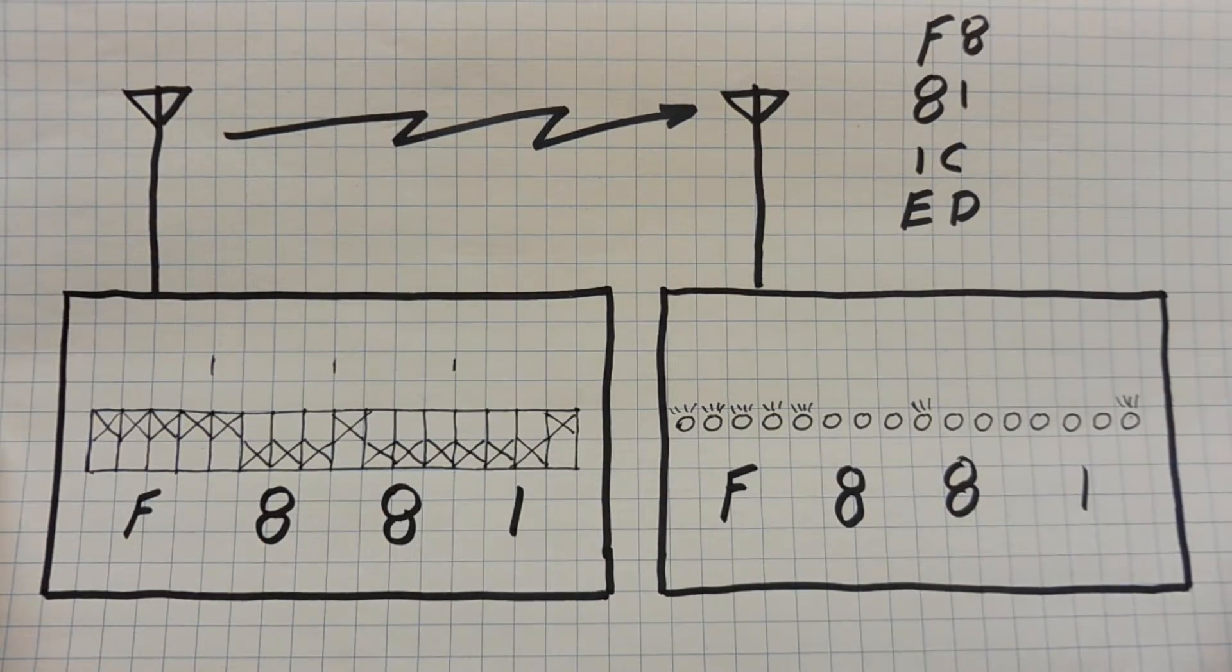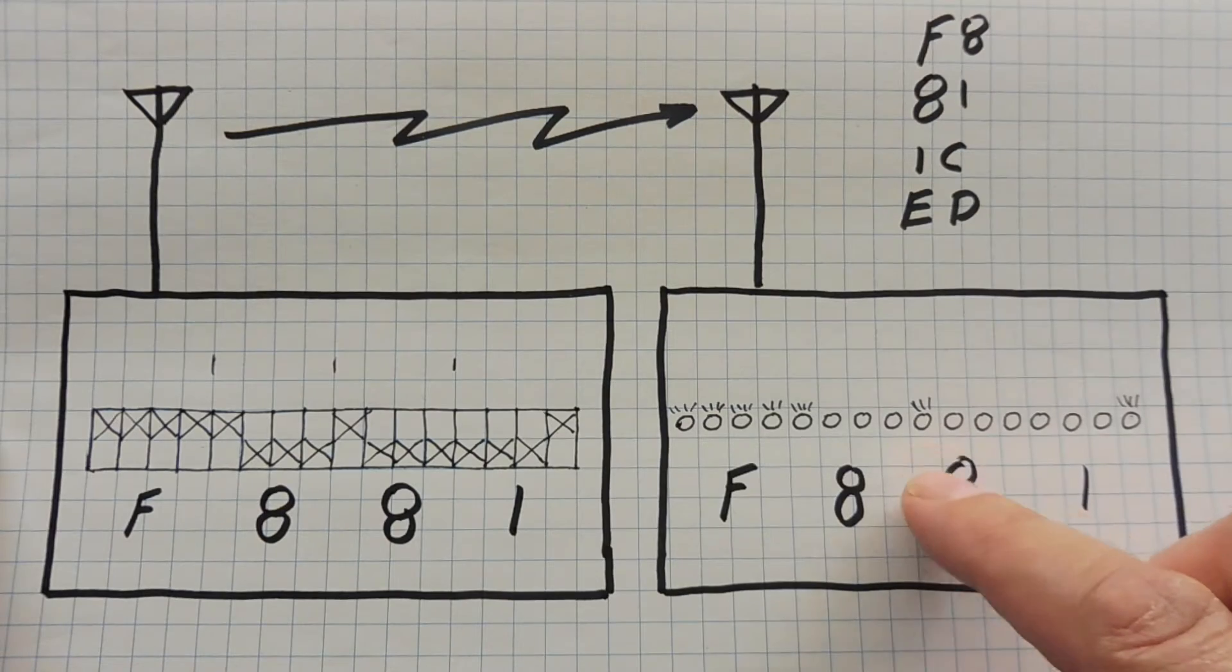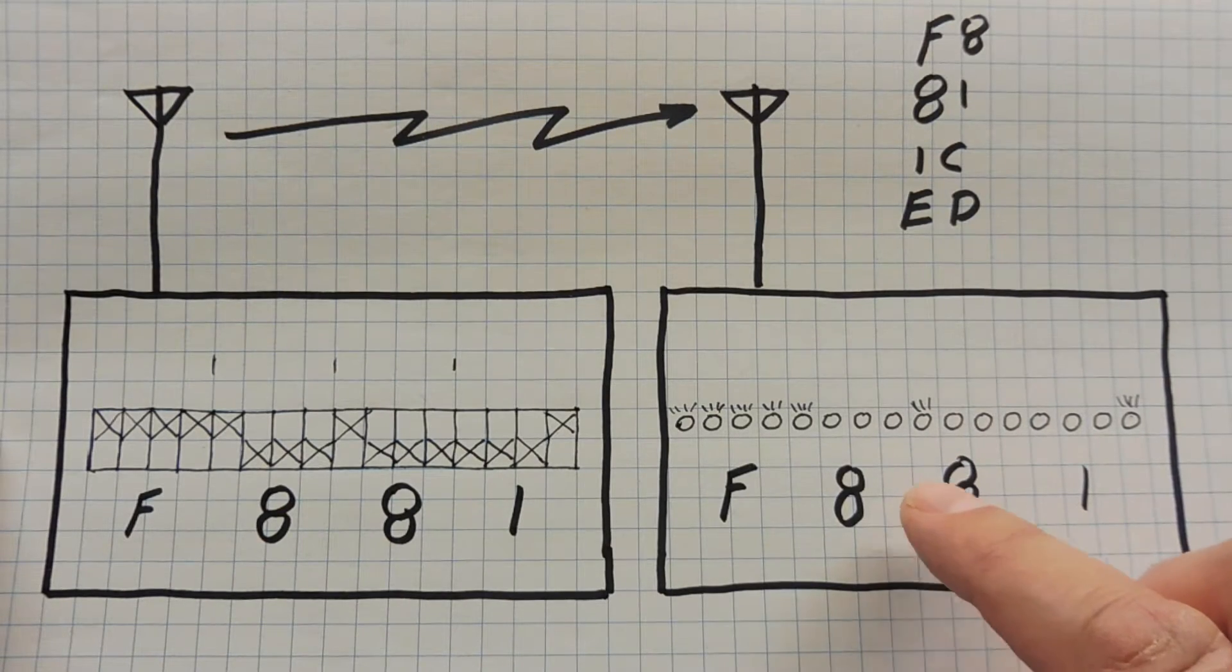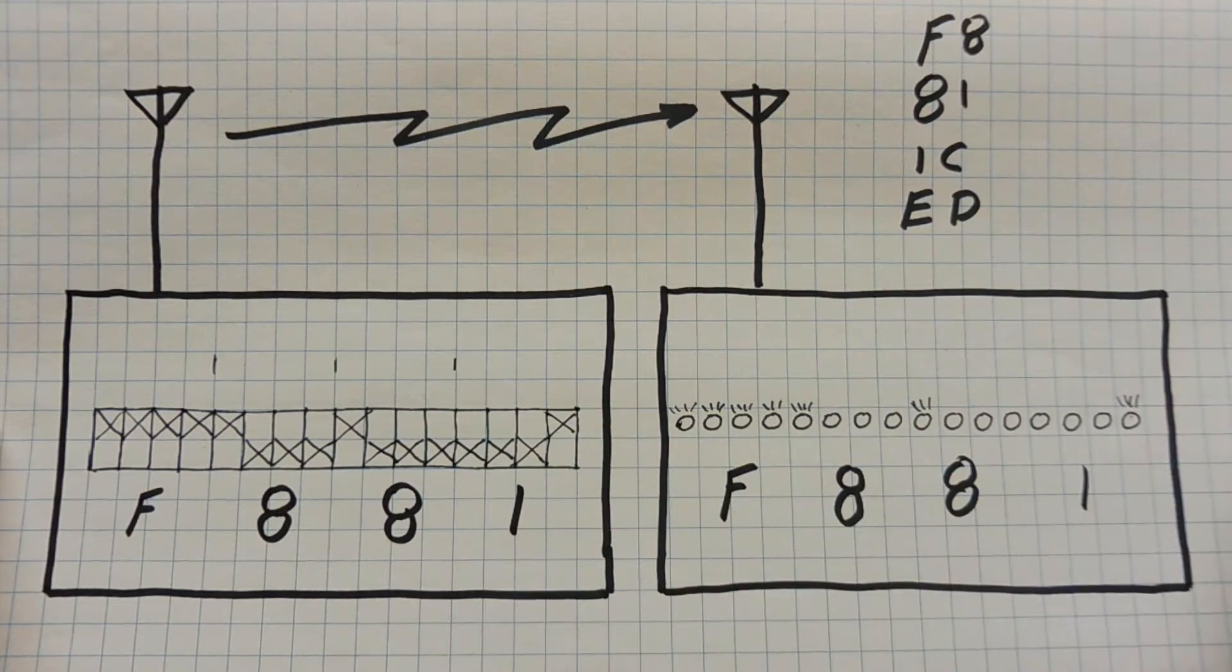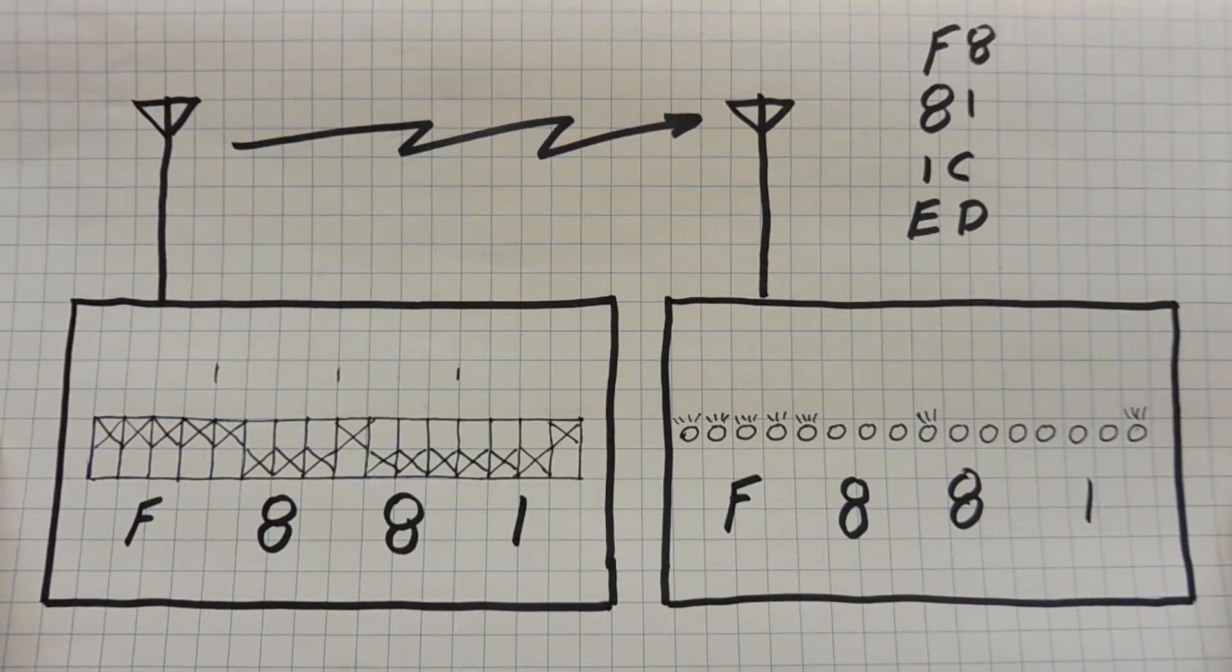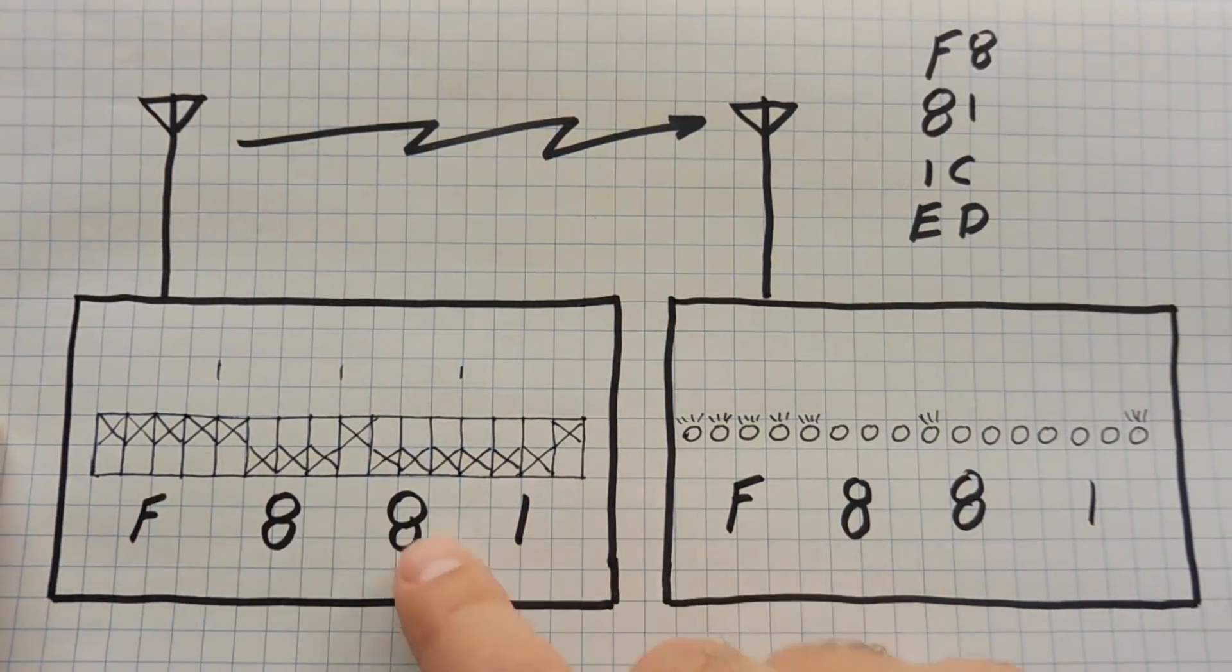On the right we have a receiver with 16 LEDs. So what we want to do is send the status of the 16 switches by radio over to the receiver, and the LEDs will light up according to the status of the switches. So what we do, we send the data by radio, which will be F881, that's the position of the switches,